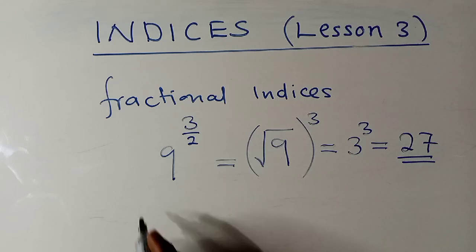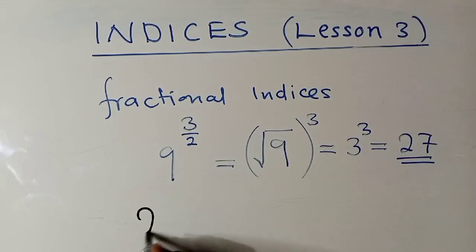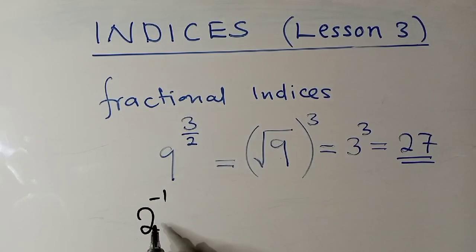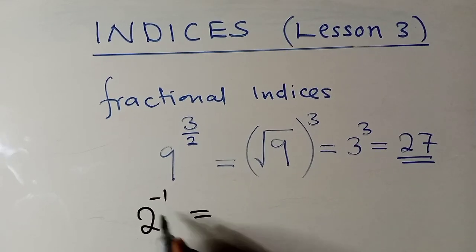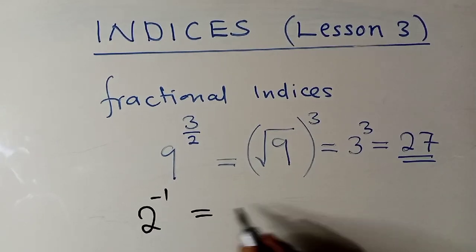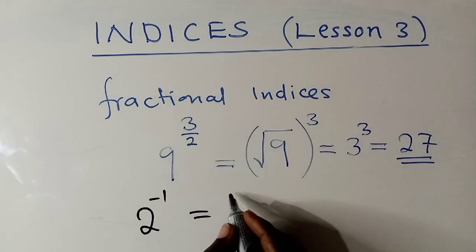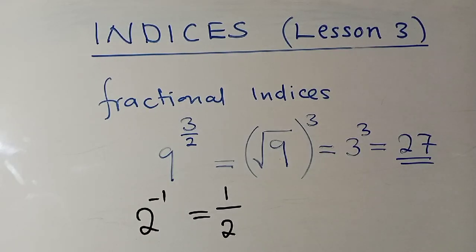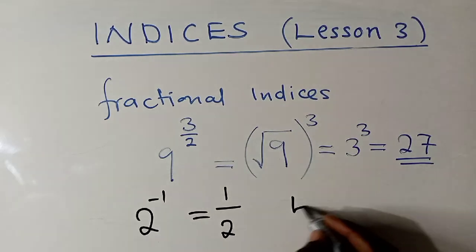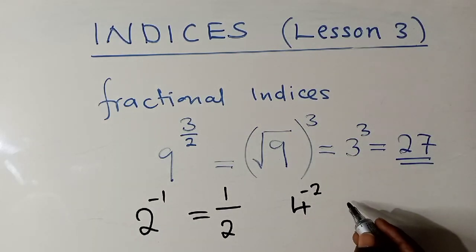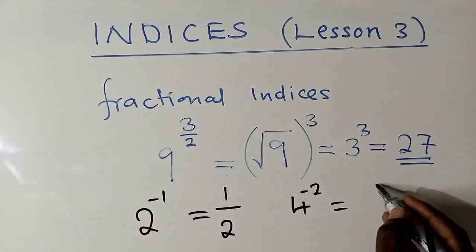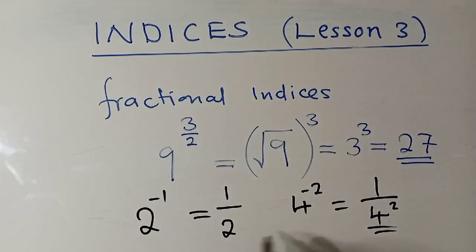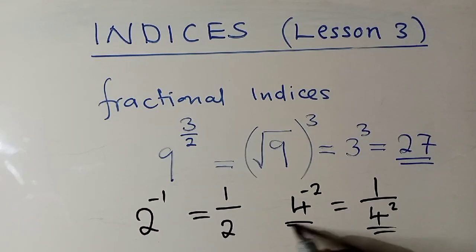One more thing — under indices you don't leave your answer with a negative power. If your final answer has a negative power, you need to switch it. You write 1 over the expression. For example, 4 to the power negative 2 becomes 1 over 4 to the power 2. This is the reciprocal. You don't leave your answer with a negative power — you switch it.